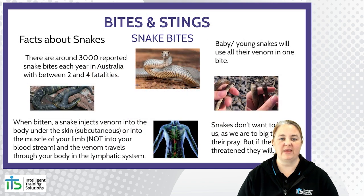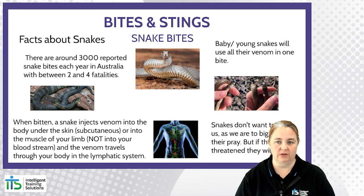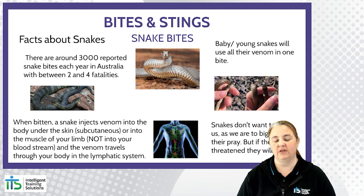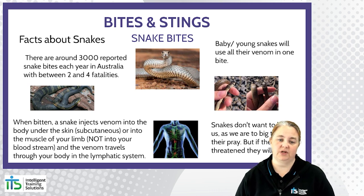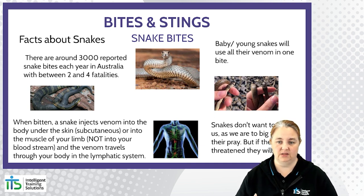There are about 3,000 reported snake bites each year in Australia and only between two and four fatalities — with good first aid care, the outcome can be really good. Australian snakes have the ability to decide how much venom they give you; however, baby or young snakes will always give all of their venom because they feel they always need to protect themselves. When bitten, a snake injects venom under the skin — subcutaneously — or into the muscle, not into the bloodstream. The venom travels through the body in the lymphatic system, which is why we try to keep the casualty as still as possible.